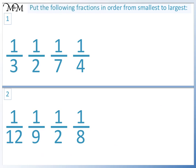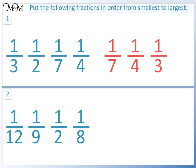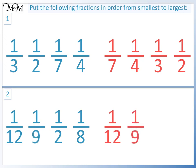Here are some questions for you to try. Arrange these fractions from smallest to largest — pause the video and have a go. Question one: we have one seventh, one quarter, one third, one half. One seventh is smallest, one half is largest. Question two: we have one twelfth, one ninth, one eighth, one half. One twelfth is smallest, one half is largest.